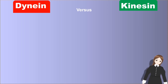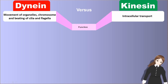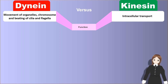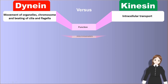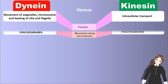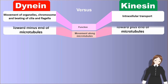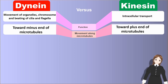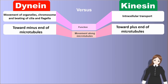Kinesin and dynein are two motor proteins. Now I want to compare kinesin with dynein. Function: kinesin plays a role in intracellular transport, but dynein plays a role in movement of organelles, chromosomes, and beating of cilia and flagella. Movement along microtubules: kinesin moves towards the plus end of microtubules, but dynein moves towards the minus end of microtubules.